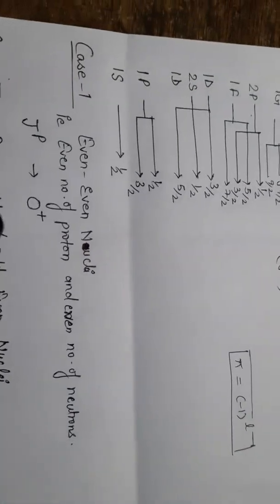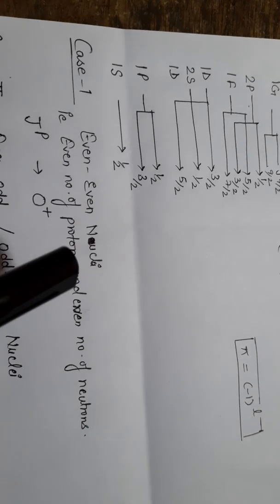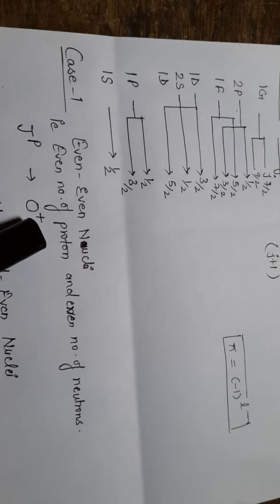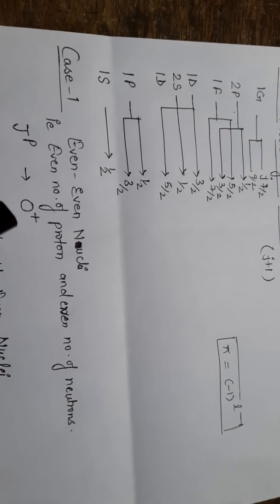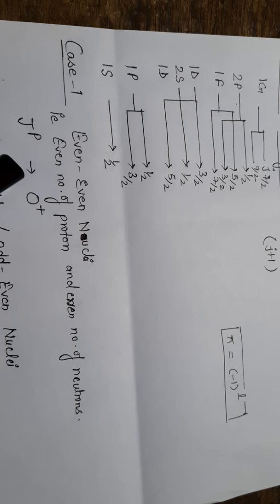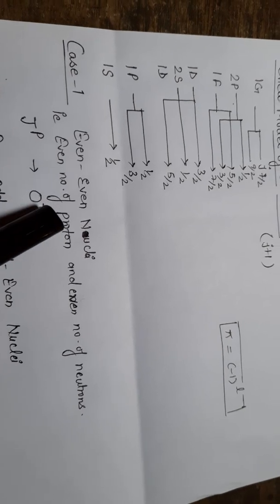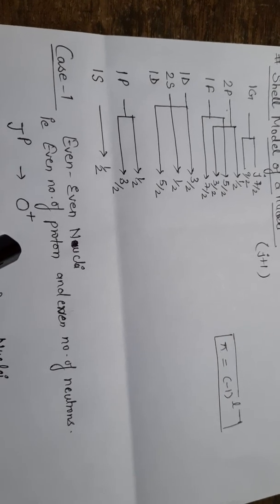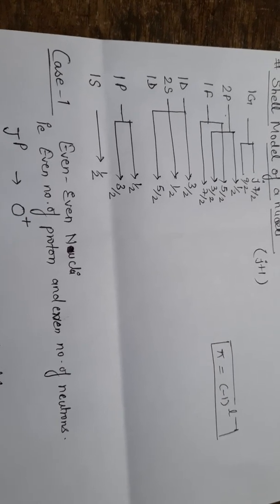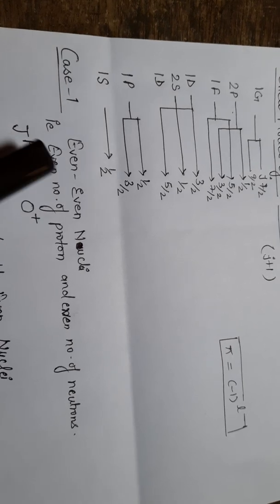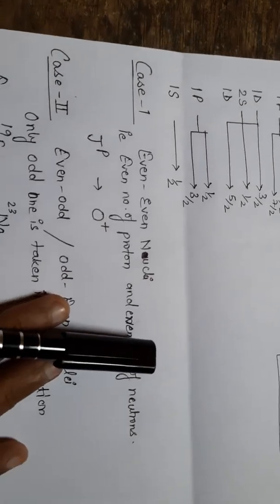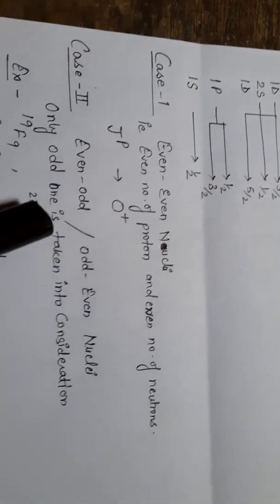In the first case — even-even nuclei, meaning even number of protons and even number of neutrons — J to the power P is always zero-plus. That is, parity is positive and total angular momentum is zero. This is a fixed condition for all even-even nuclei.